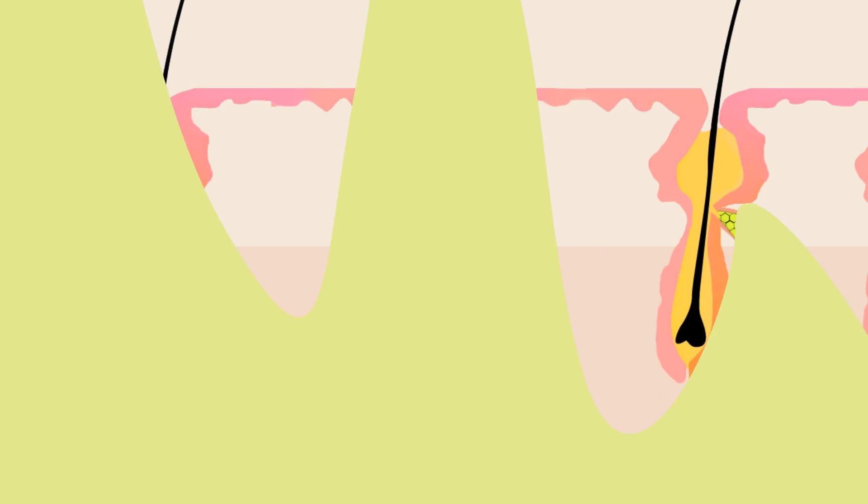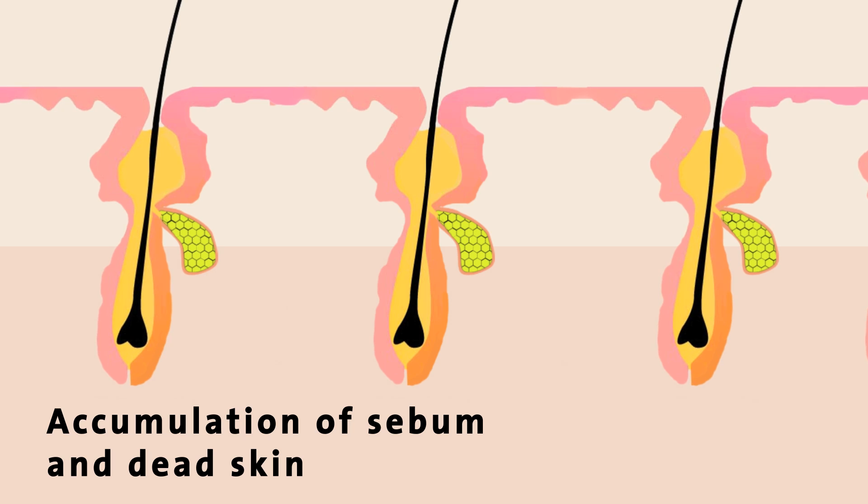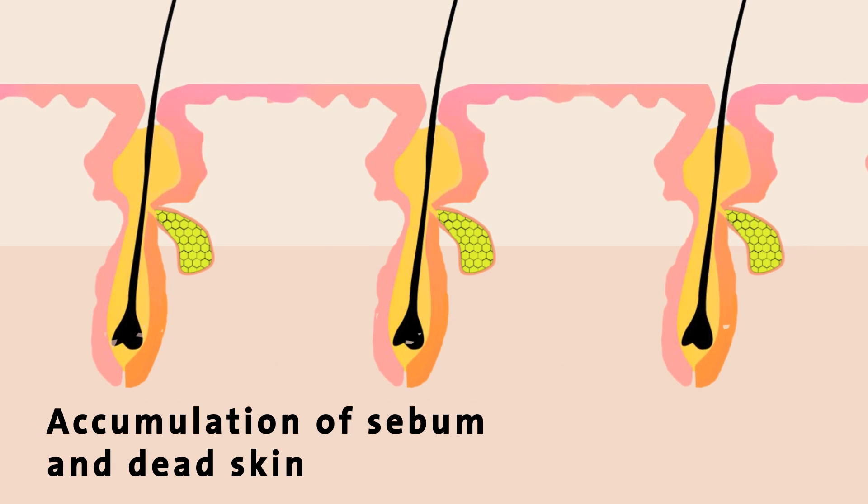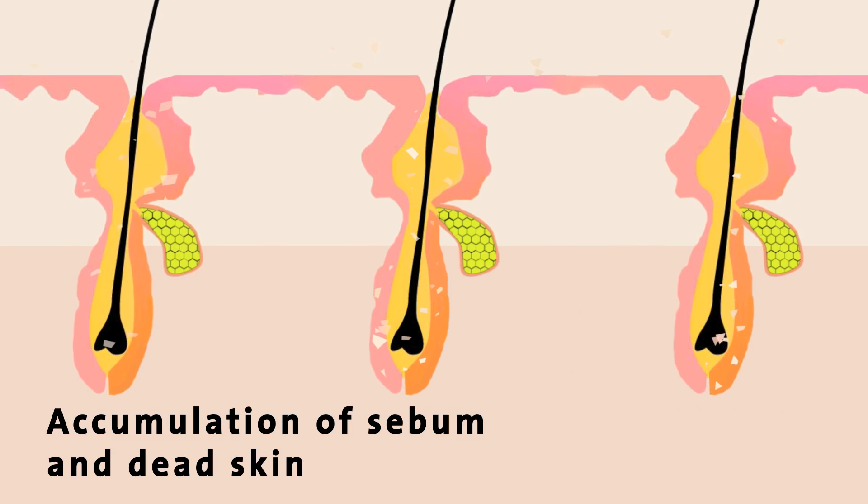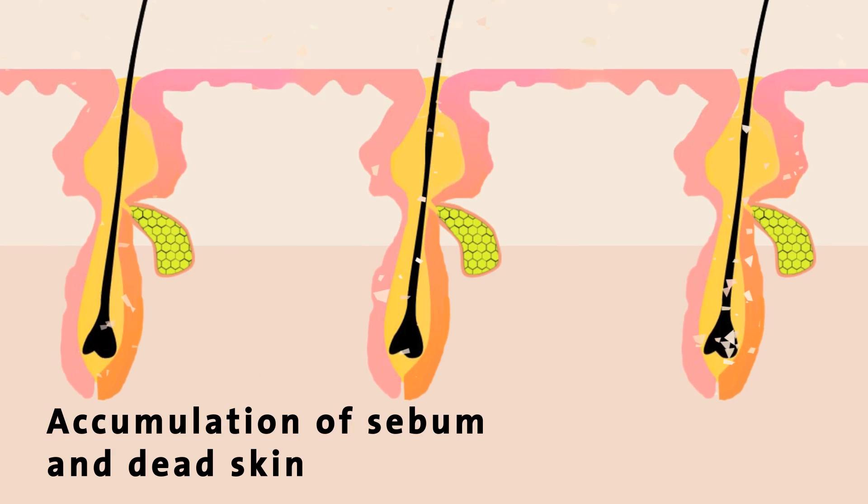Sometimes, this excess sebum can clog up the pores. Adding to the mix are dead skin cells. A total of about 30,000 skin cells are shed every hour. A lot of these skin cells are shed inside the pores themselves.